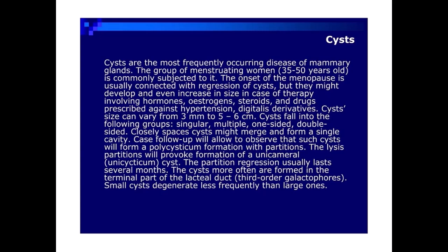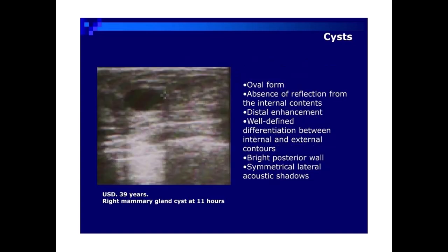Small cysts degenerate less frequently than large ones. On ultrasound, cysts appear in oval form, with absence of reflection from the internal contents, distal enhancement, well-defined differentiation between internal and external contours, a bright posterior wall, and symmetrical lateral acoustic shadows.